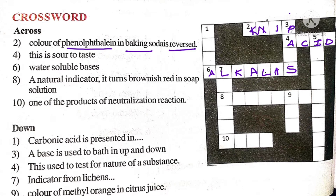Next, the 8th one — a natural indicator that turns brownish red in soap solution. So, natural indicator that turns brownish red in soap solution — it is turmeric. You have already seen the activities and the lesson, so you can easily understand it.